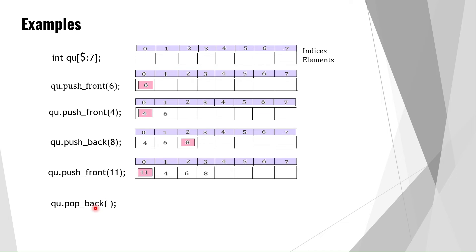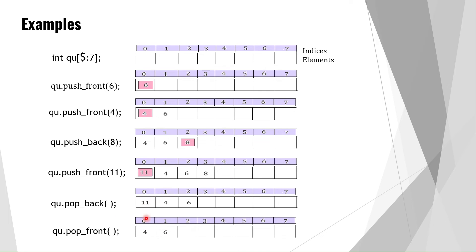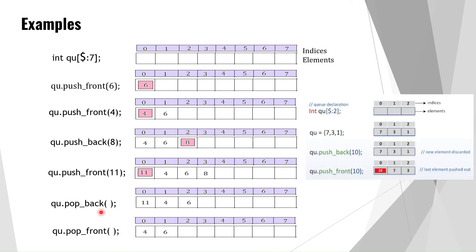When pop_back is called, the element at the last index (eight) is removed. When pop_front is called, the element at the front (11) is removed, leaving only four and six. Push_front and push_back increase the queue size by inserting elements, while pop_front and pop_back decrease the size by removing elements. The shuffle method and others will be demonstrated in code.